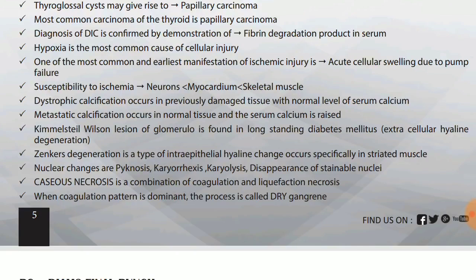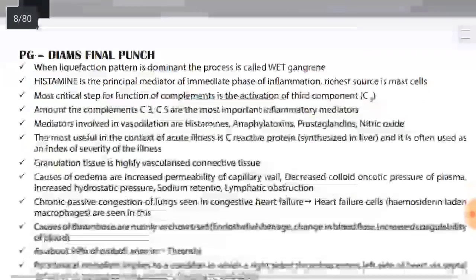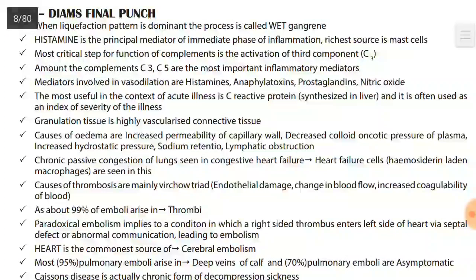Caseous necrosis is a combination of coagulation and liquefaction necrosis. When coagulation pattern is dominant it is called dry gangrene, and when liquefaction pattern is dominant it is called wet gangrene.